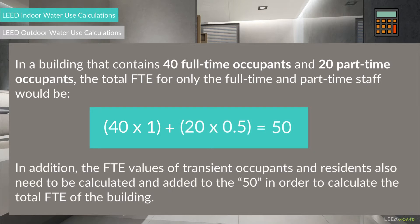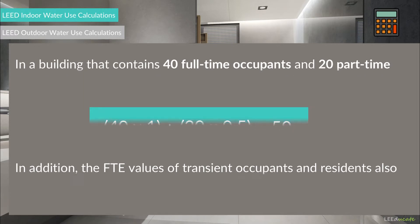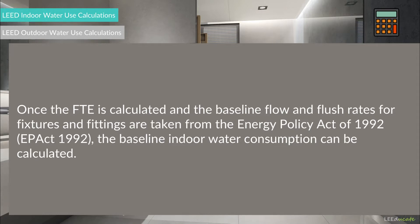In addition, the FTE values of transient occupants and residents also need to be found and added to 50 in order to calculate the total FTE of the building. Once the FTE is calculated and the baseline flow and flush rates for fixtures and fittings are taken from EPAct 1992, the baseline indoor water consumption can be determined.